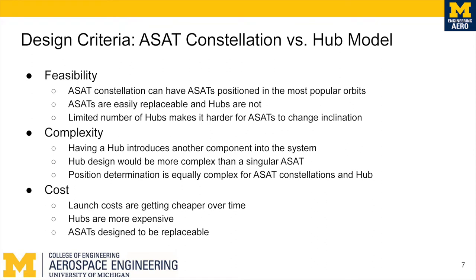ASAP constellation versus hub model. The ASAP constellation can carefully position ASATs at specific altitudes and inclinations that are more popular, allowing for a faster response time instead of having to travel from the hub. ASATs are also easier to replace than hubs and are designed to carry out a limited number of missions before being replaced. The addition of a hub adds another, more complex vehicle type to the mission. Having to launch multiple hubs in addition to all of the ASATs would drastically increase the number of launches, which is the driving factor for total mission cost.